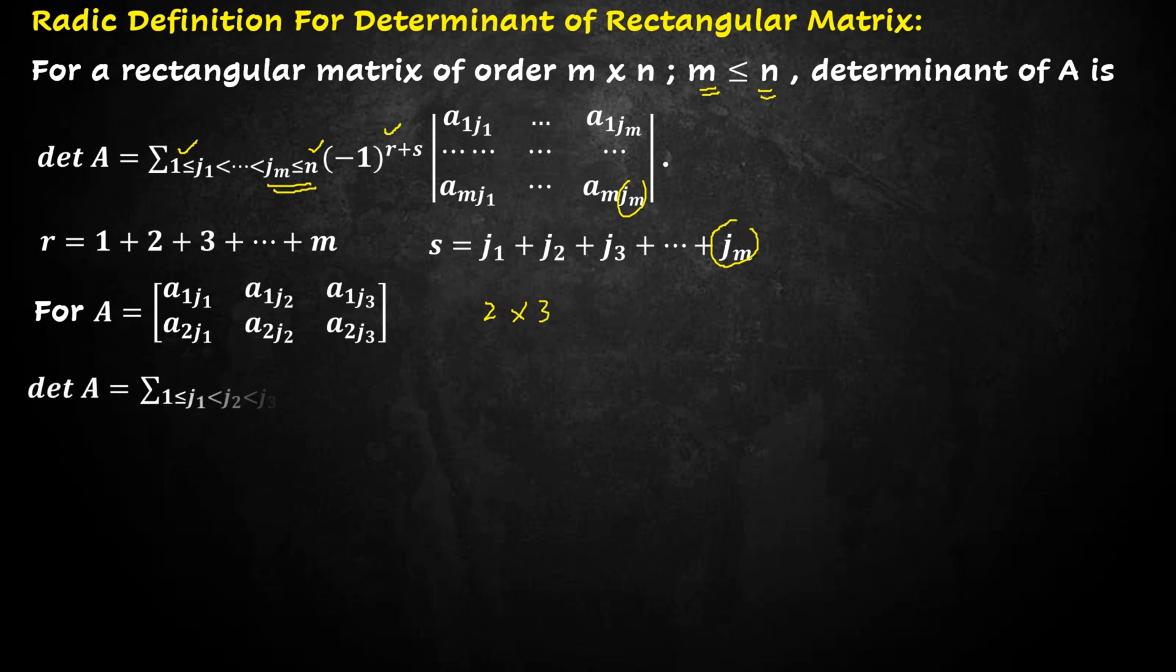We apply the definition and write the determinant of A is equal to summation 1 less or equal to j1 less than j2 less than j3 less or equal to 3, where 3 is the number of columns, into the determinant of 2 x 3 matrix.